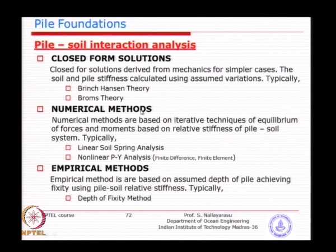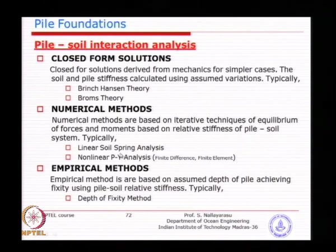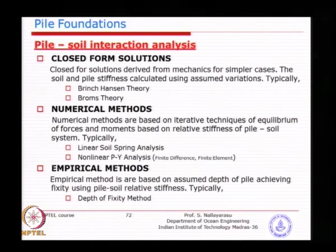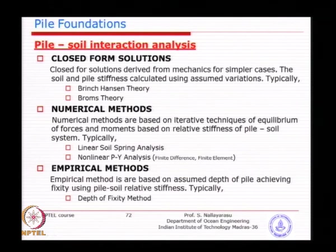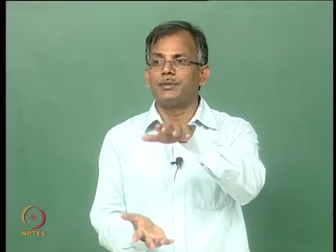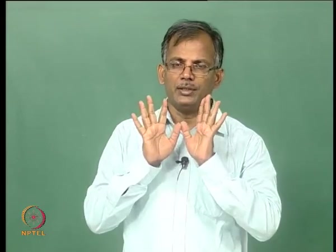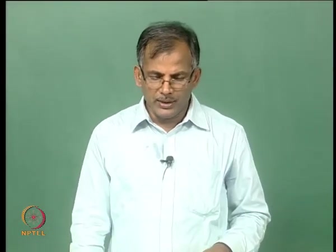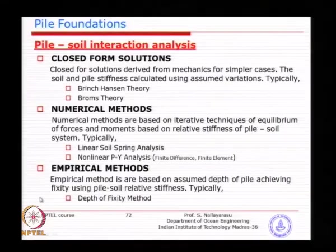So we normally go into numerical solutions — either linear or non-linear springs — which can be solved using finite difference and finite element. For a linear spring, any simple matrix method can solve the displacement directly. The depth of fixity method is very commonly used for onshore structures and bridges, and is easy to obtain as long as you can represent the soil by its lateral compression characteristics — we call it subgrade reaction or subgrade pressure. Using the relative stiffness of the pile, you can find out how much it could bend and where the maximum bending moment occurs.